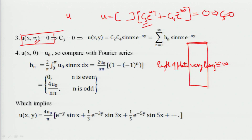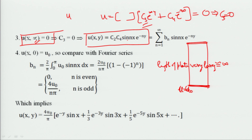Substituting c₃ = 0 in our assumed solution, u becomes c₂c₄ sin(nx) e^(-ny). Now we apply the fourth condition: u(x, 0) = u₀ at y = 0, meaning along this bottom edge the temperature is u₀. Here n takes values 0, 1, 2, 3 up to infinity.